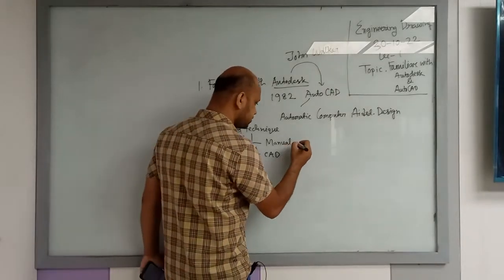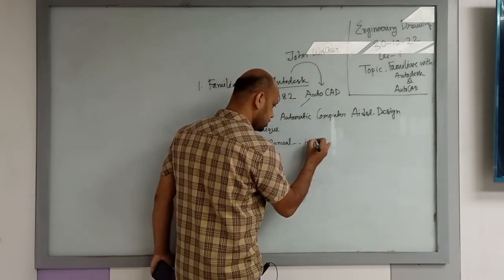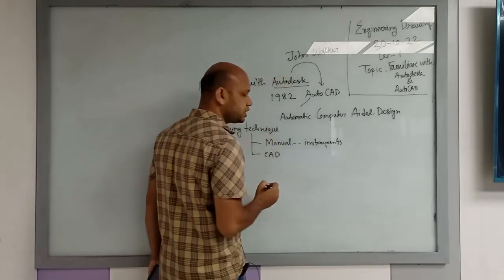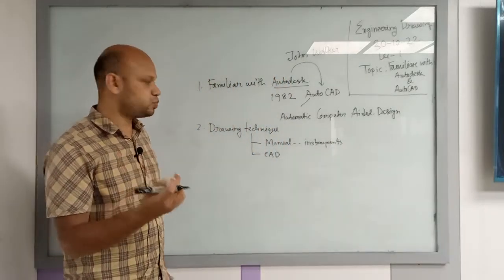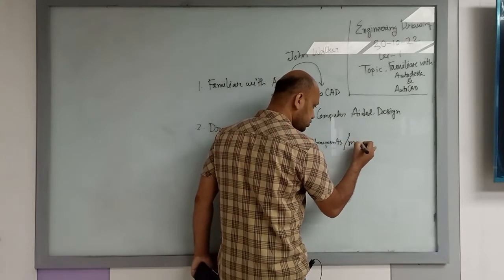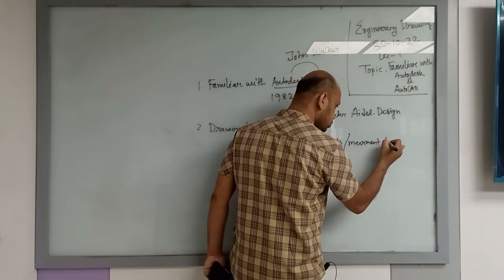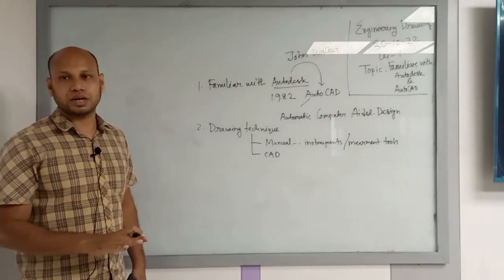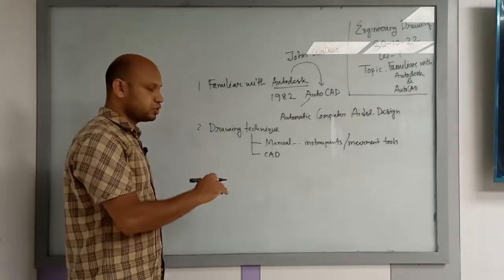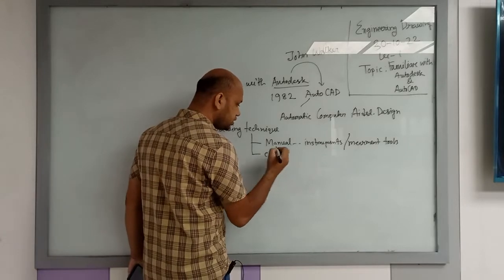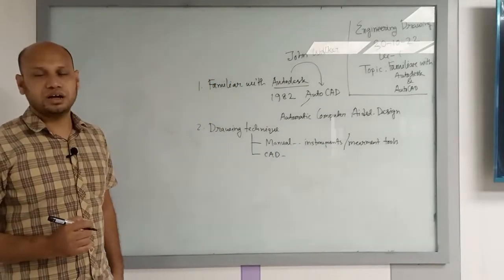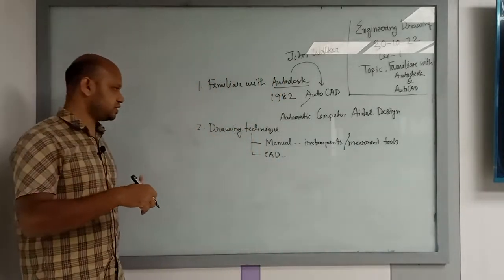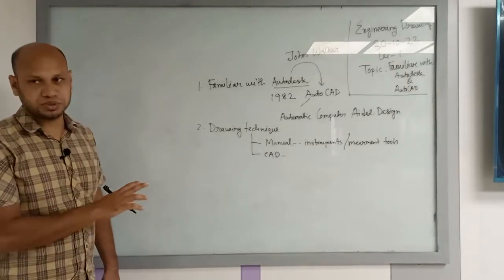Manual drawing uses instruments, measurements, and tools on paper. CAD is computer aided design — software-based design. So in the drawing sector, there are two techniques: manual and software-based, which means CAD, and AutoCAD is a CAD software.